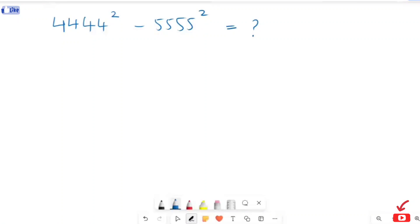Hi, here we have a nice math algorithmic problem: 4444 squared minus 5555 squared.